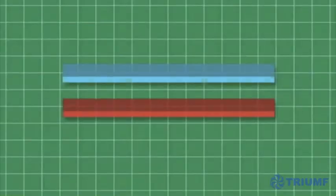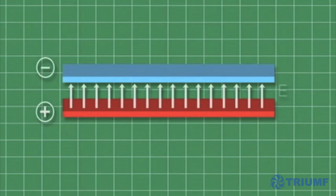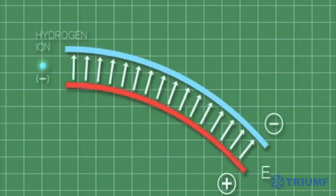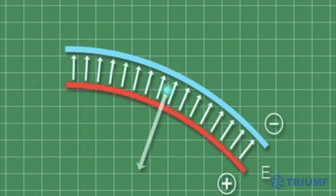We begin by using parallel metal plates inside the beamline to create a uniform electric field. The plates, called benders, are curved, creating a field that induces a constant inward force on the ions, resulting in a constant centripetal acceleration.